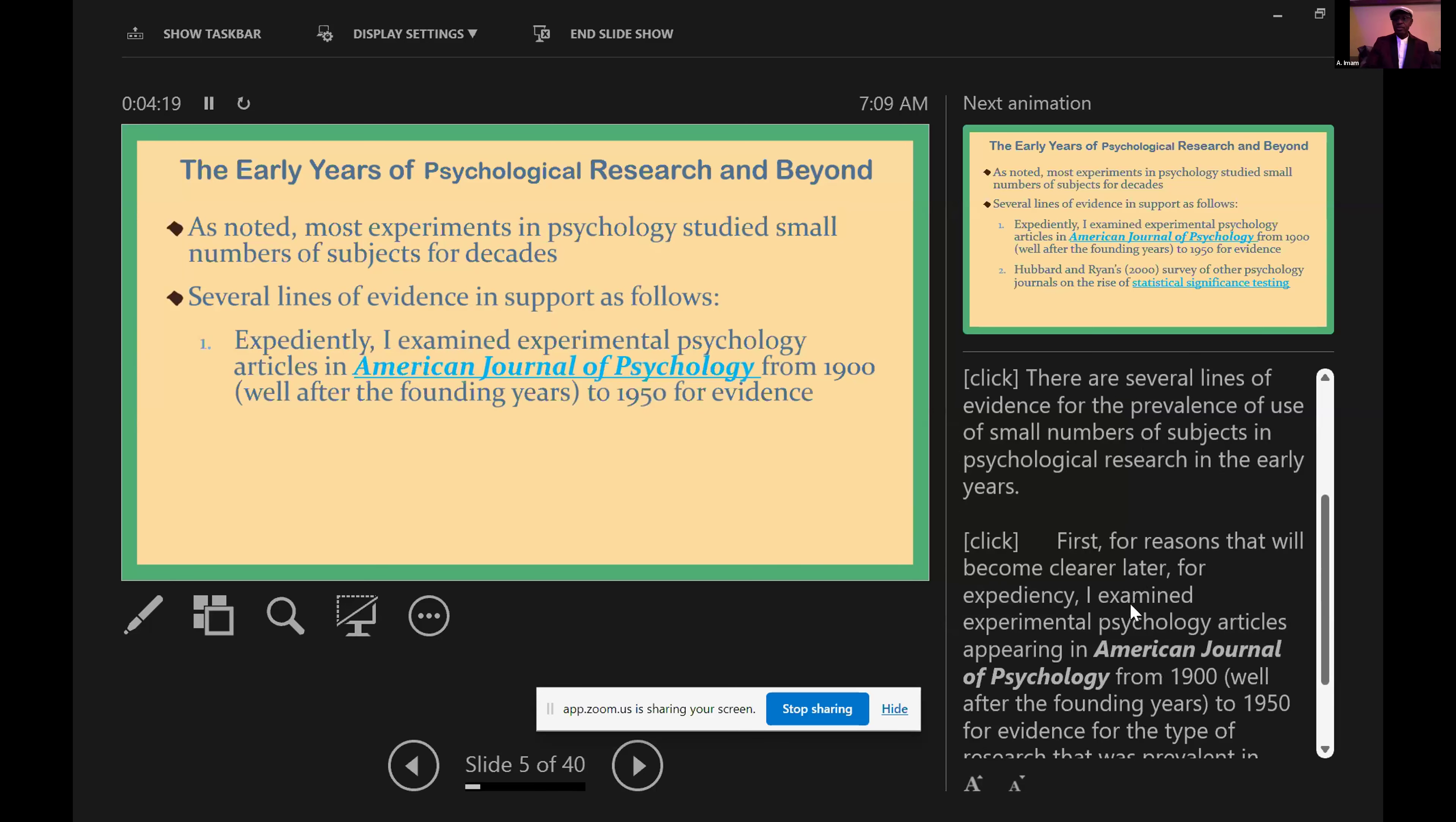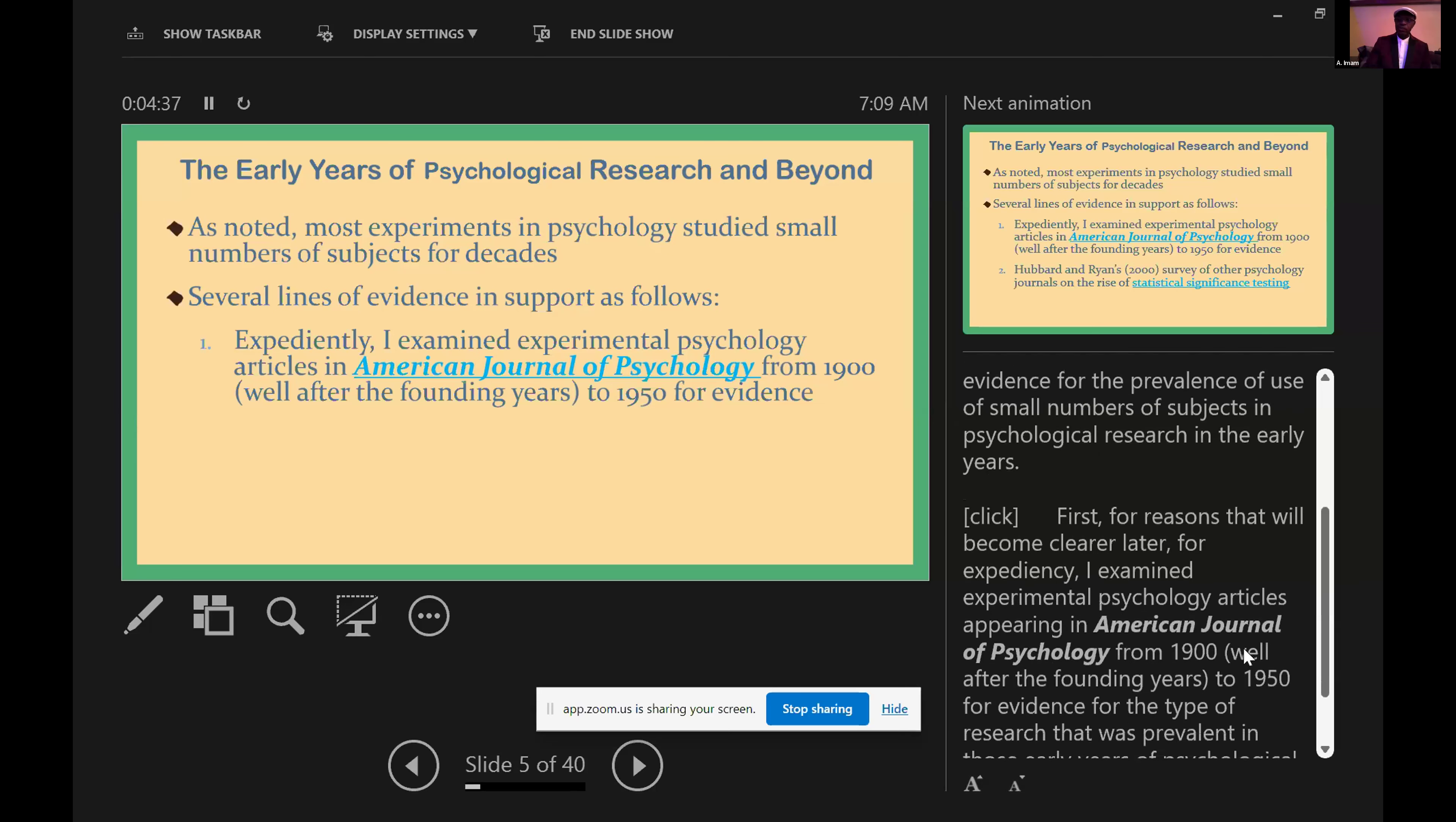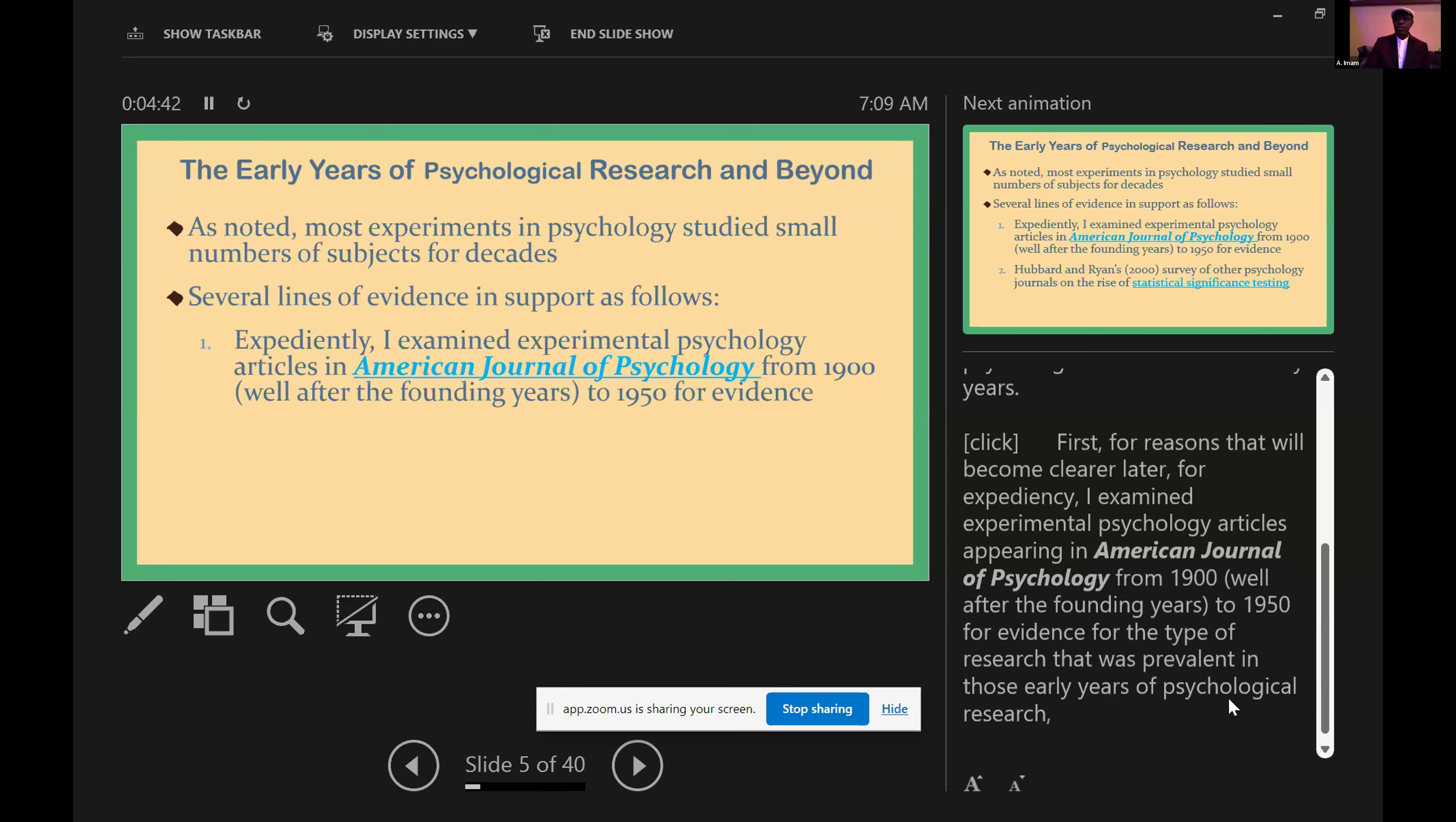First, for reasons that will become clearer later, for expediency I examined experimental psychology articles appearing in American Journal of Psychology from 1900, well after the founding years of psychology, to 1950 for evidence for the type of research that was prevalent in those early years of psychological research.